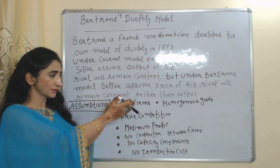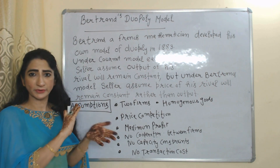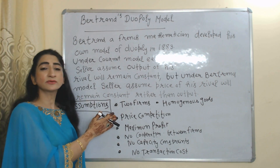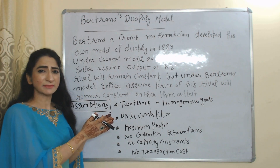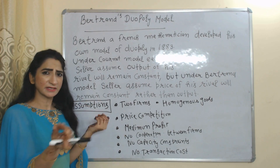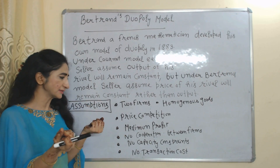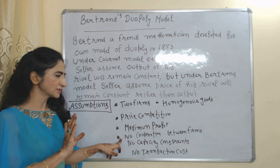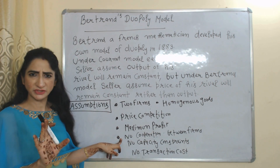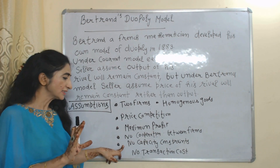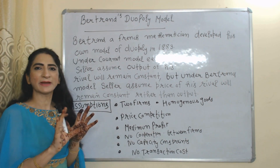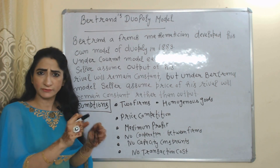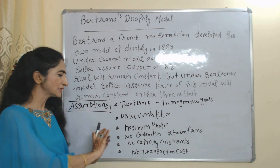The assumptions of this model are: there are two firms and their product is homogeneous, meaning their product is exactly the same. There is price competition, meaning firms compete with each other by changing prices, and firms want to earn maximum profit. There is no cooperation between firms.